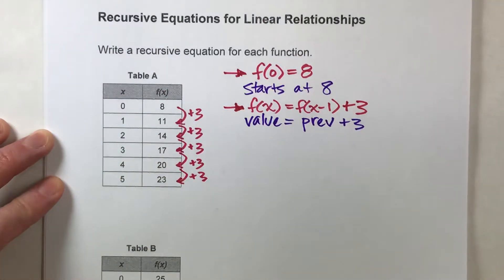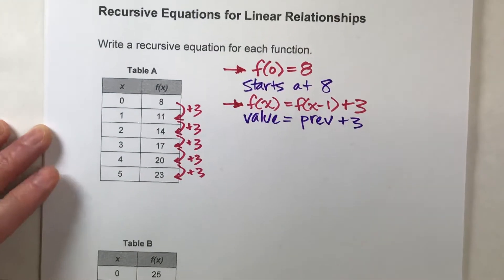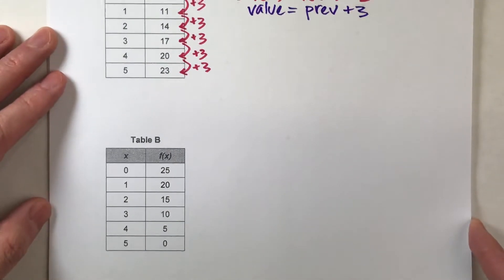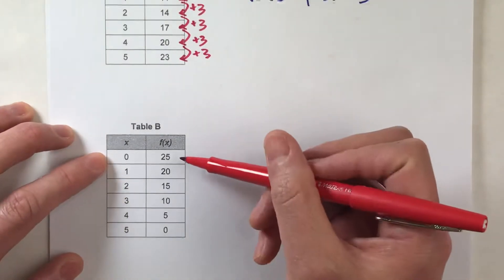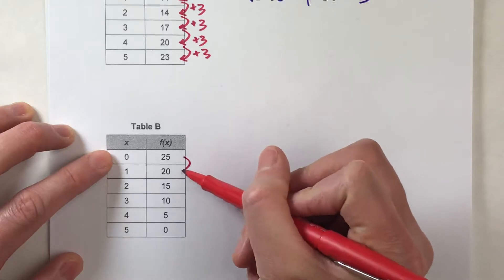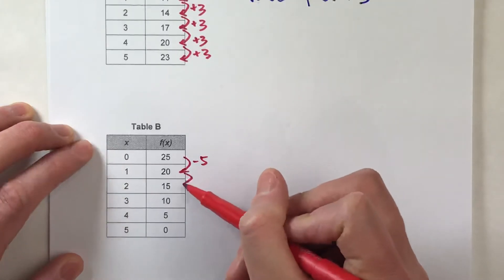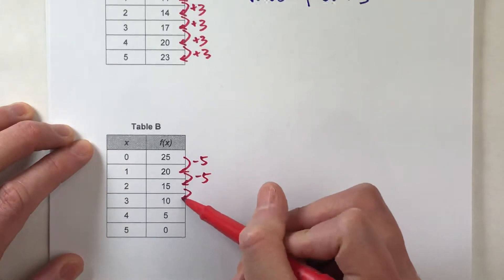Now, let's do another example so you can see it without the words and see it a little more straightforward. So, table B. Notice, in this table, we start at 25 and this time, it's decreasing by 5 every single time.